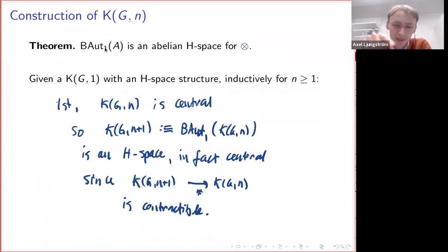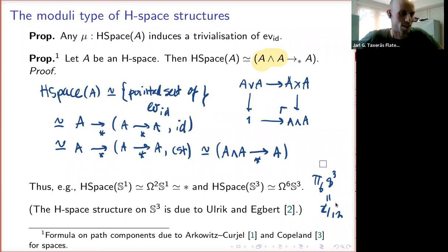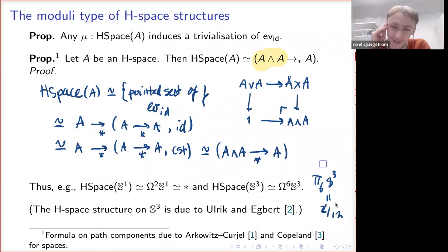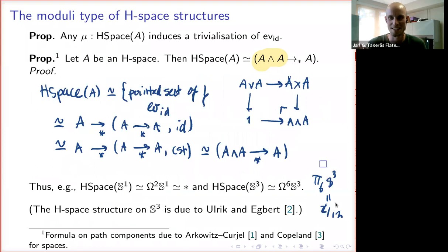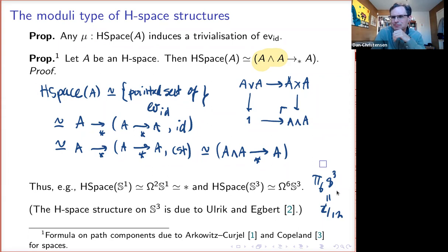About Pi_6(S3) — did you compute it? No, I haven't computed it. Classically it's known to be Z mod 12. It would be great to compute it in HoTT because then we would know how many H-space structures up to homotopy there are on the 3-sphere. What do you think is easier — analyzing the right-hand side or the left-hand side of this equivalence? I think it's easier to compute Pi_6(S3) by other means. It would be really cool to compute it just by H-space theory — it gives a venue of attack, but it seems very complicated. It would be a novel way of doing it.